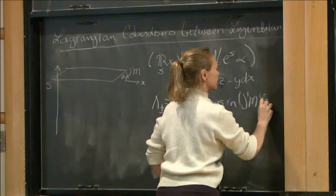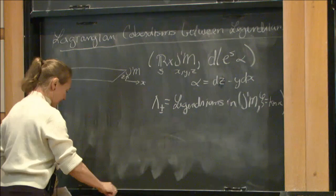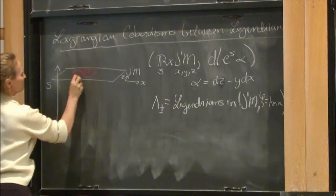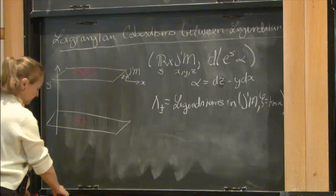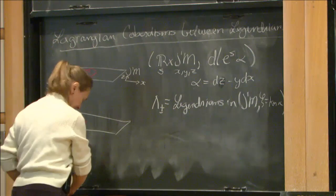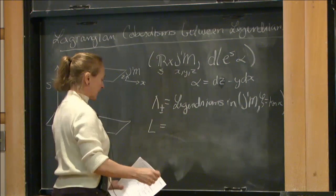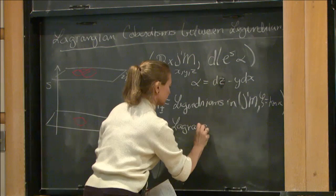We have these slices of these contact manifolds as we go up. My notation: I'll always use λ⁺ or λ⁻ for Legendrians. When I'm in J¹(M), I'm always using the contact structure given as the kernel of that standard form. So for example, I can put one here — that's some slice above the other one, and another one down here. We'll have a Lagrangian between them. I'll always denote my Lagrangians by L.